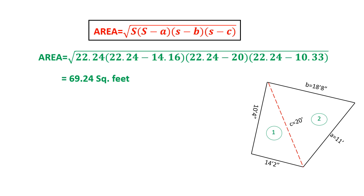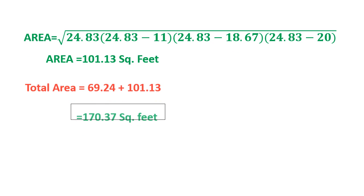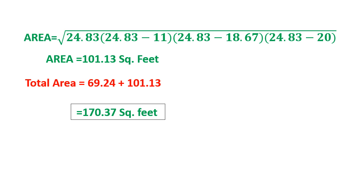Now we will find the area for section 2. We already know that S (semi-perimeter) equals (A plus B plus C) divided by 2. This distance is considered as A, this distance as B, and this distance as C. We get S equal to 24.83 feet. Putting all the values into the formula, we get the area around 101.13 square feet. Now we have the area for section 1 and section 2, so combining both areas: total area equals 69.24 plus 101.13, which is equal to 170.37 square feet.